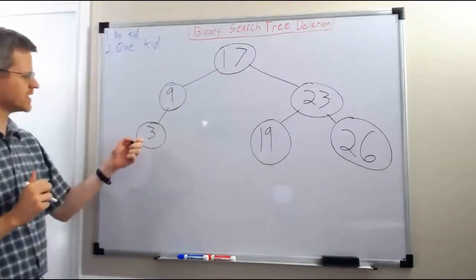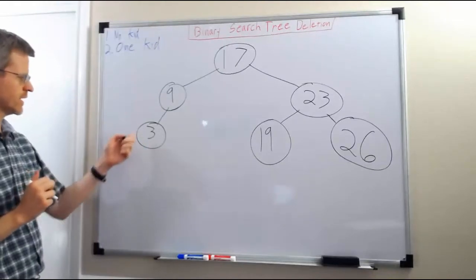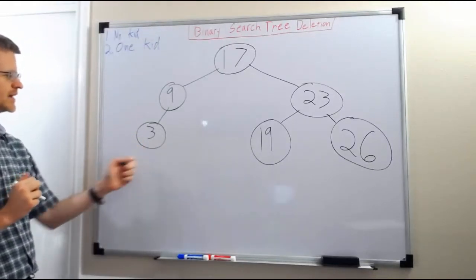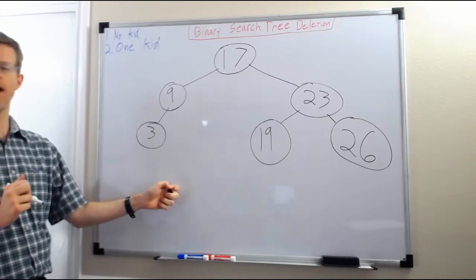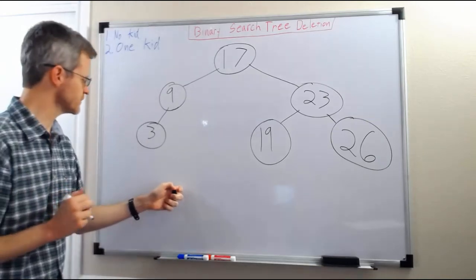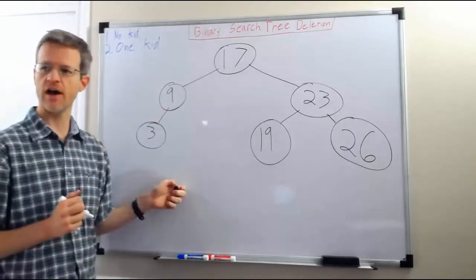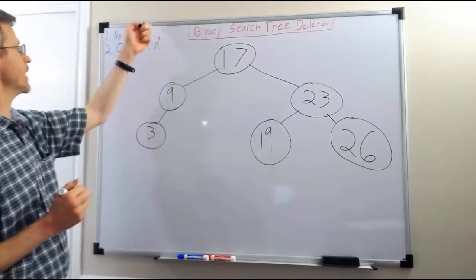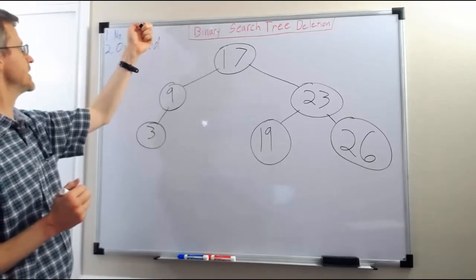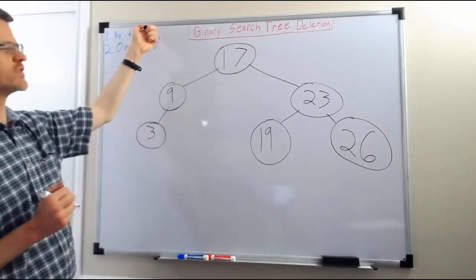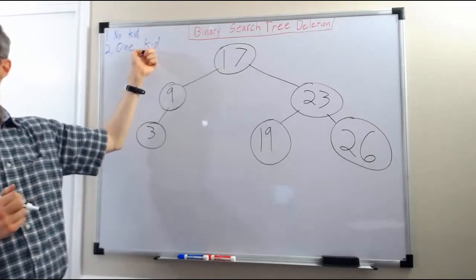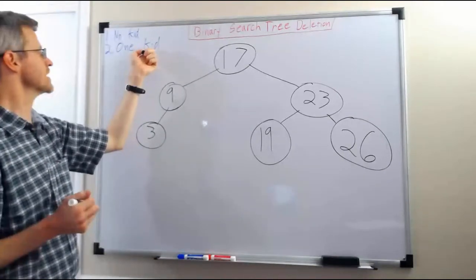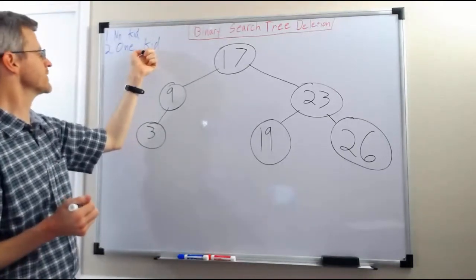And if 3 had had any children, then they would have still been attached as the left and right children of 3. So when the node to be deleted has no children, things are easy. When it has one subtree, we just bring up that subtree.